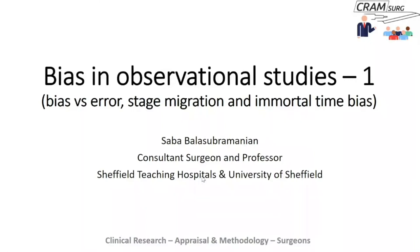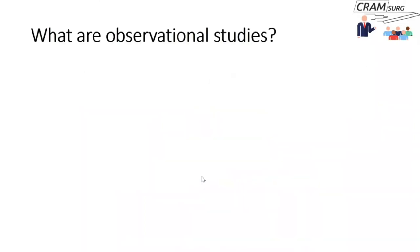In this tutorial we're going to be talking about what bias is in the context of observational studies, and we're going to talk about two kinds of bias: stage migration and immortal time bias. This will be particularly of interest to people in the cancer field, and I'm going to choose examples from upper GI and colorectal surgery, so hopefully this will capture the imagination of any GI trainees.